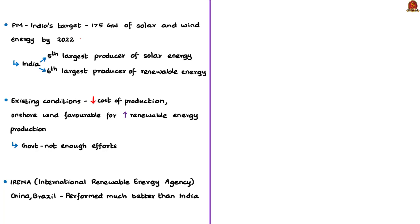India has set a target of generating 175 gigawatts of solar and wind energy by the year 2022. The Prime Minister also said that India is the fifth largest producer of solar energy and sixth largest producer of renewable energy in the world. For these policies, the Prime Minister was awarded the Champions of Earth award by the United Nations Environment Programme. The author says India's initiative towards expanding renewable energy capacity is a step in the right direction, with two benefits: the environmental perspective of generating clean energy, and the generation of employment opportunities.